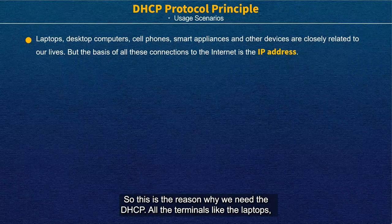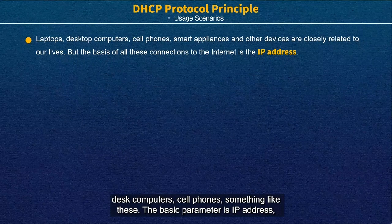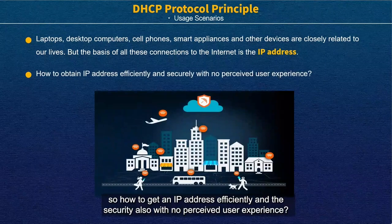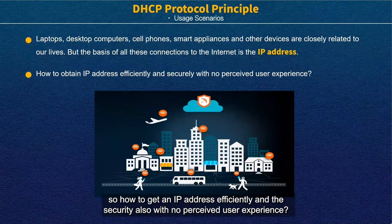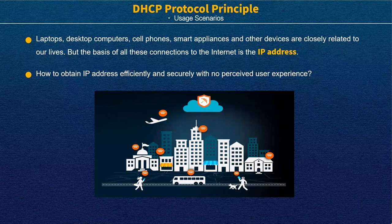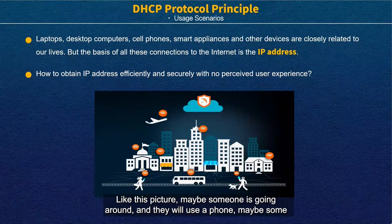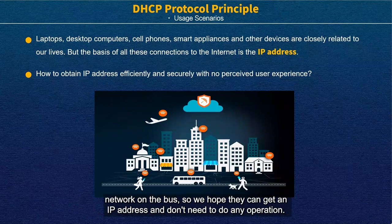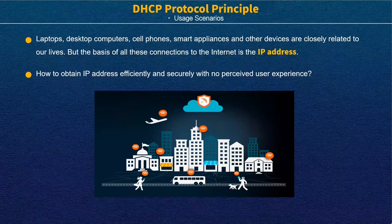On terminals like laptops, desktop computers, and cell phones, the basic required parameter is an IP address. We want them to get an IP address efficiently and securely with no perceived user experience burden. For example, someone travelling who uses their phone on a bus network — we hope they can get an IP address without needing to do any manual operation. In this scenario, we need DHCP.